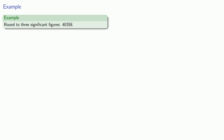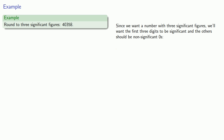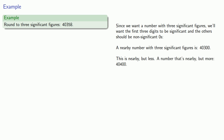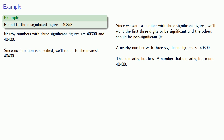What if we want to round 40358 to three significant figures? We want the first three digits to be significant and the rest to be non-significant zeros. A nearby number with three significant figures that's less is 40300, and a nearby number that's more is 40400. Since the direction of rounding is not specified, we round to the nearest, which is 40400.